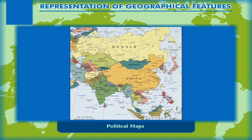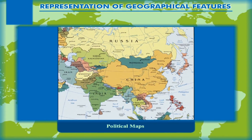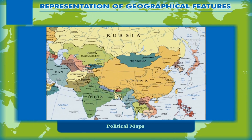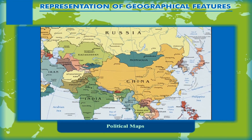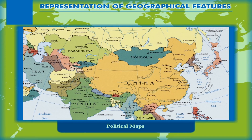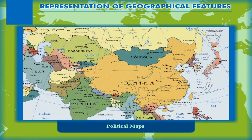Political maps show the political divisions of the Earth. Countries, states, and cities are marked along with their well-depicted boundaries.